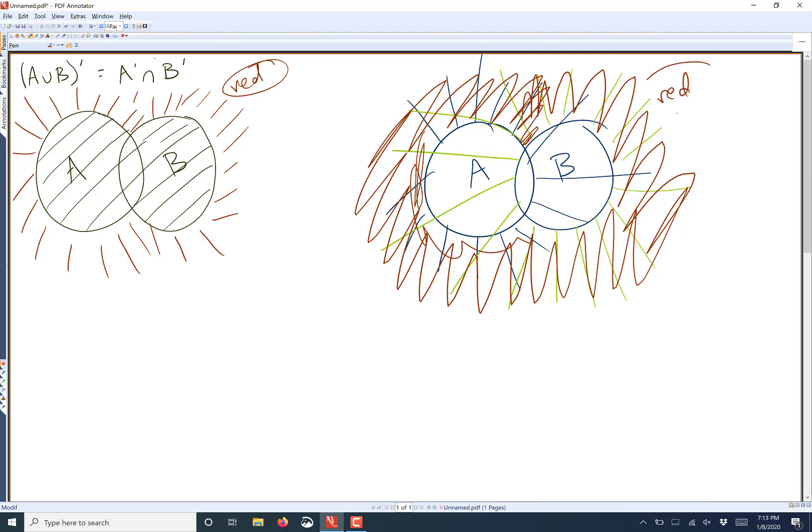Notice, again, here, the red is what we were interested in. Everything outside the two circles. So if you take the group of A union B and then find the complement, that is the same as A complement intersect B complement.